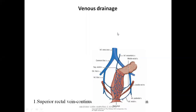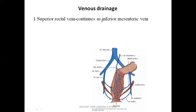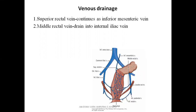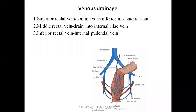Now let's talk about the venous drainage of the rectum. The superior rectal veins continue as the inferior mesenteric vein. The middle rectal veins drain into the internal iliac veins, which continue as the common iliac vein. The inferior rectal veins drain into the internal pudendal vein, which drains into the internal iliac veins. You can compare the venous drainage with the arteries — for example, the inferior mesenteric artery continues as the superior rectal artery, and the superior rectal vein continues as the inferior mesenteric vein.